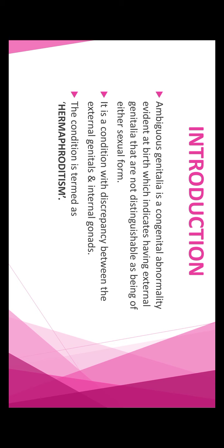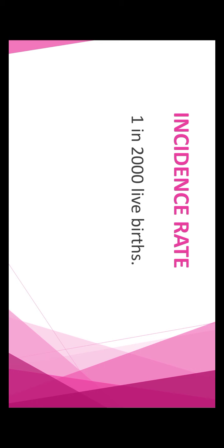In ambiguous genitalia, there is a lack of similarity. If a child is male, he will have male sex glands and male sexual organs. If female, she will have female sex glands and female sexual organs. But in this condition, that correspondence is absent. We also call this hermaphroditism. The incidence rate is 1 in 2000 live births.